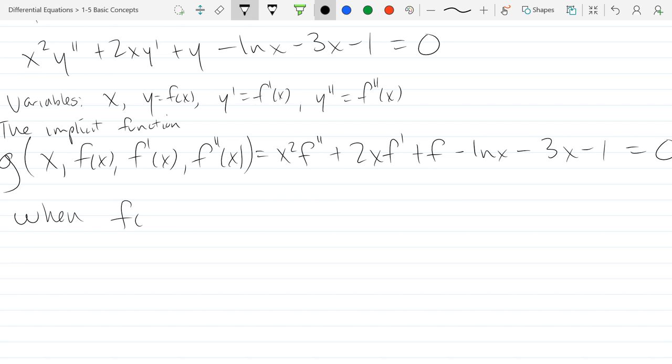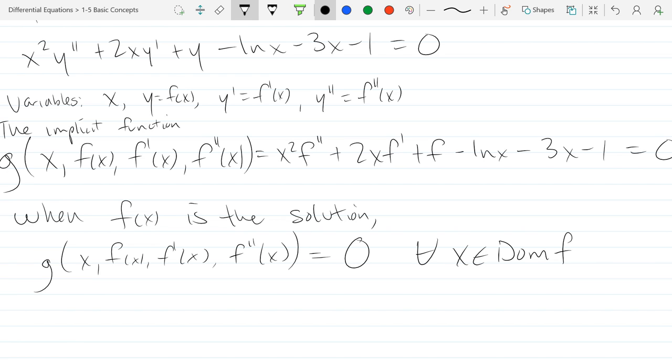So when f of x is the solution, that means it equals zero for all x in the domain of little f. So that's what it means to be a solution to this implicit function. When you plug in this particular f, you get that it equals zero for not every single x, but every x that's valid for the literal f function that we've found. So what x values did I not have to worry about for our particular example? Zero and all the negative ones. They didn't have to make this equal zero. They didn't have to satisfy this equation. Only the ones that were valid for little f.